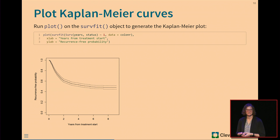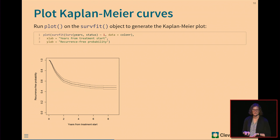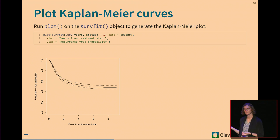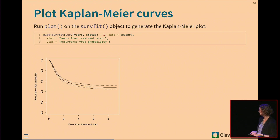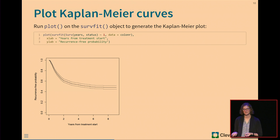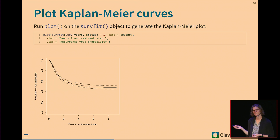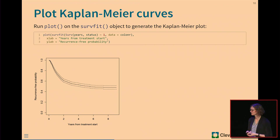The last thing we might be interested in is a Kaplan-Meier plot — a plot of the probability of being free of the event on the y-axis by time on the x-axis. We have years from treatment start across the x-axis and probability of being recurrence-free on the y-axis. The plot always starts at 1 because at the beginning of follow-up everyone is event-free, then steps down as a step function every time an event occurs. A confidence interval is shown as well.